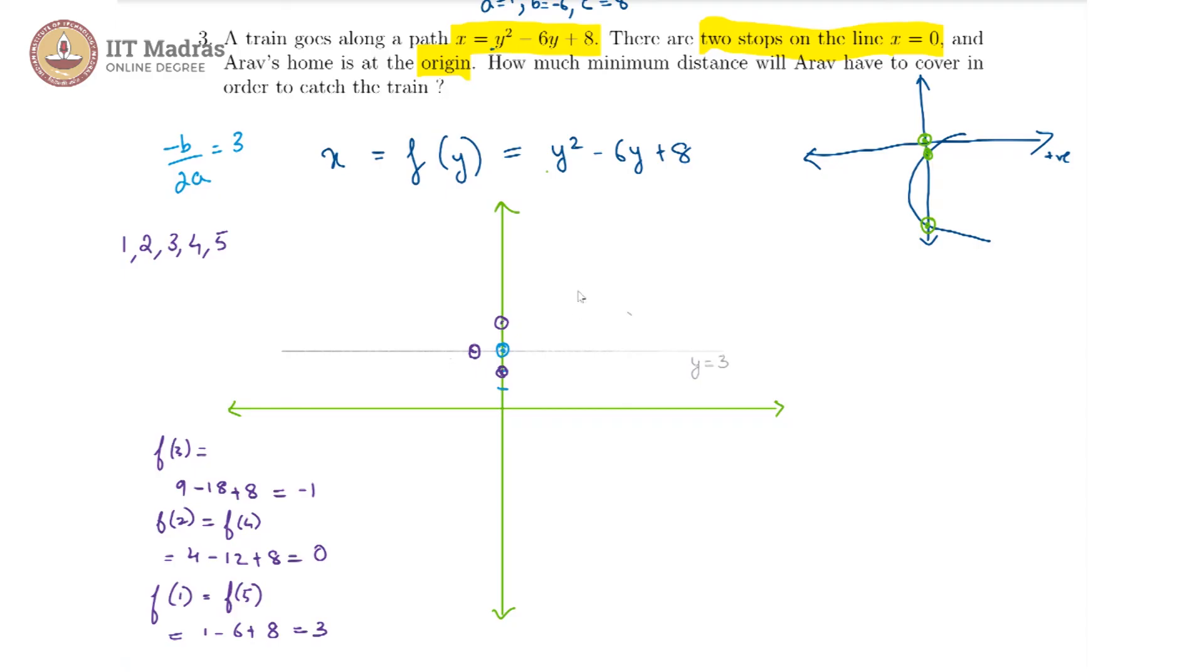We are going to be somewhere over here for these 2 points, we are going to get somewhere here and thus our quadratic parabola looks like this.